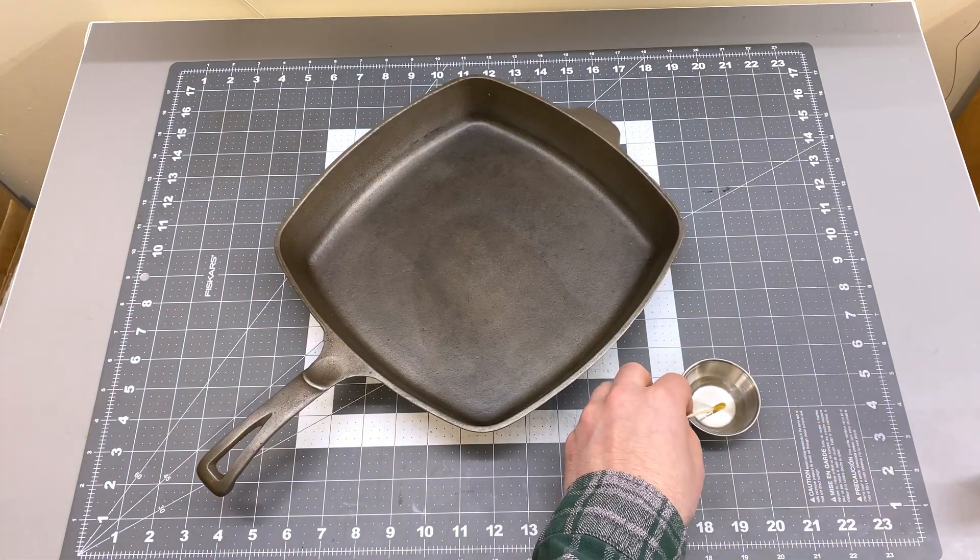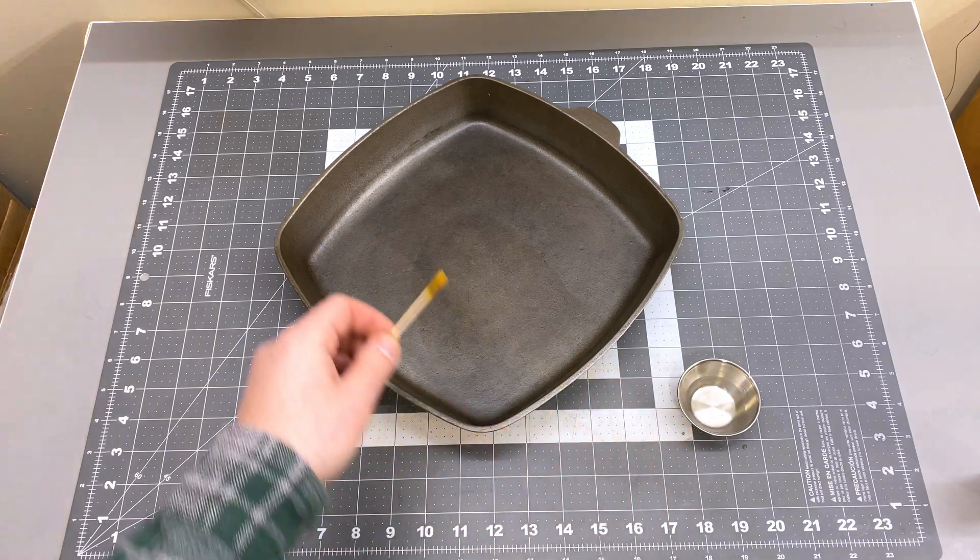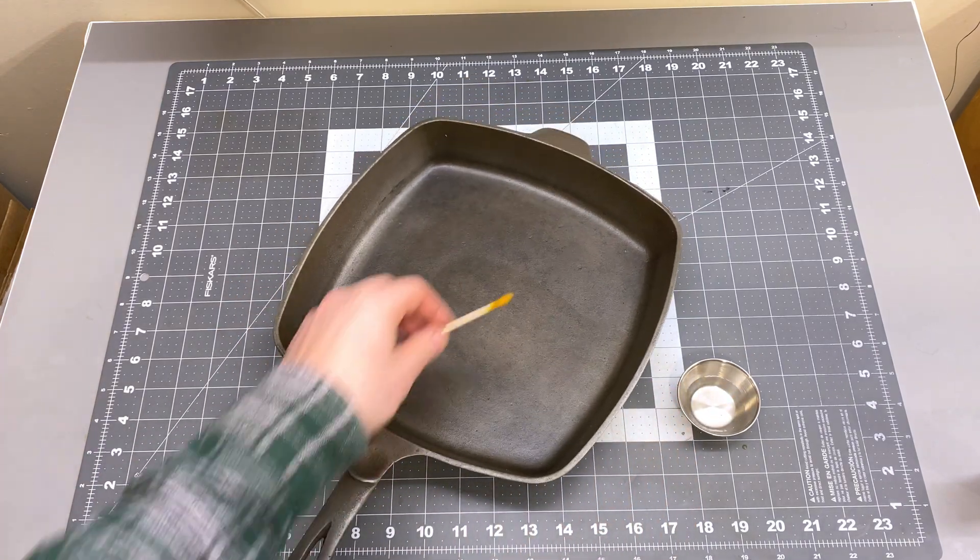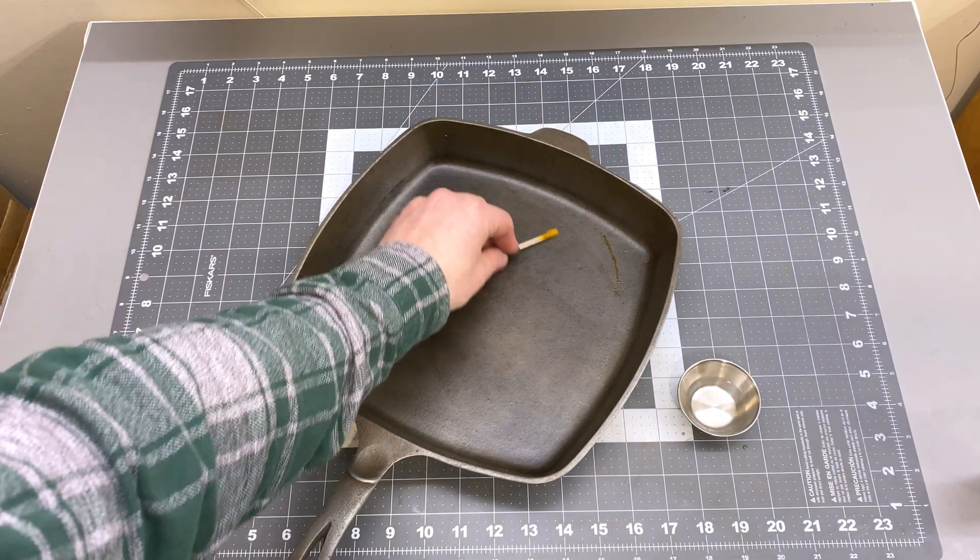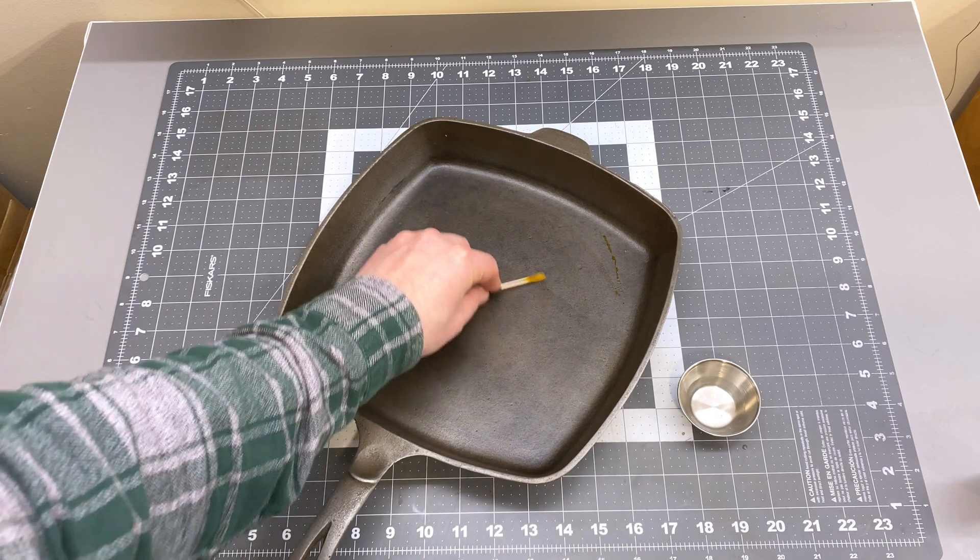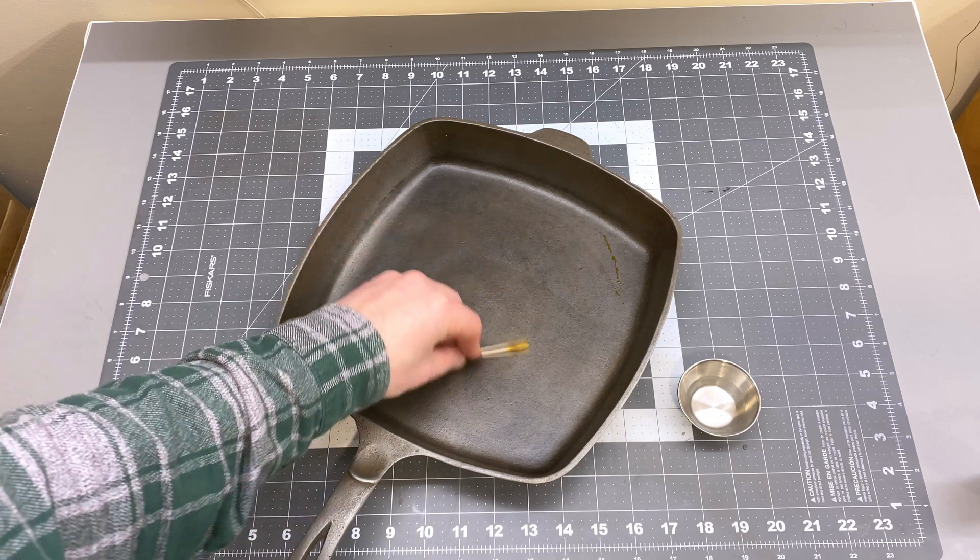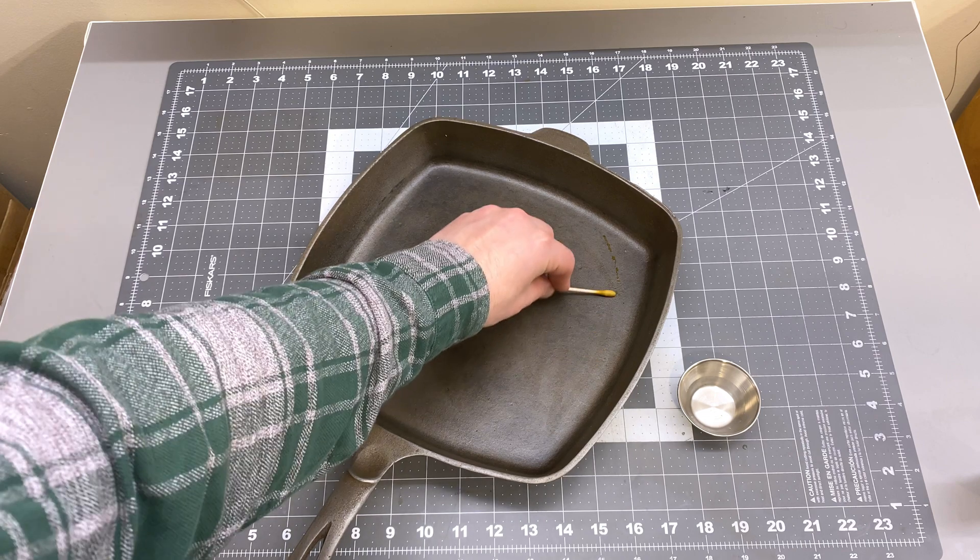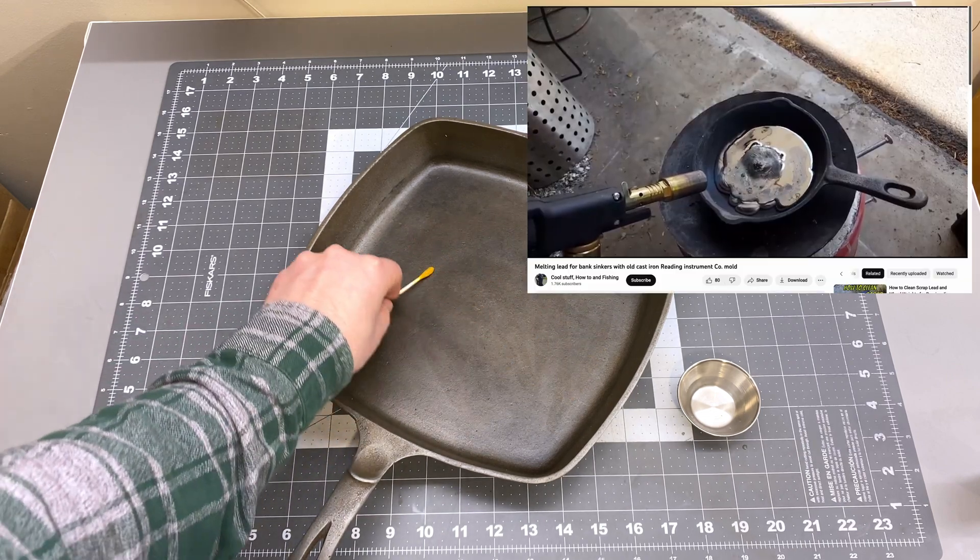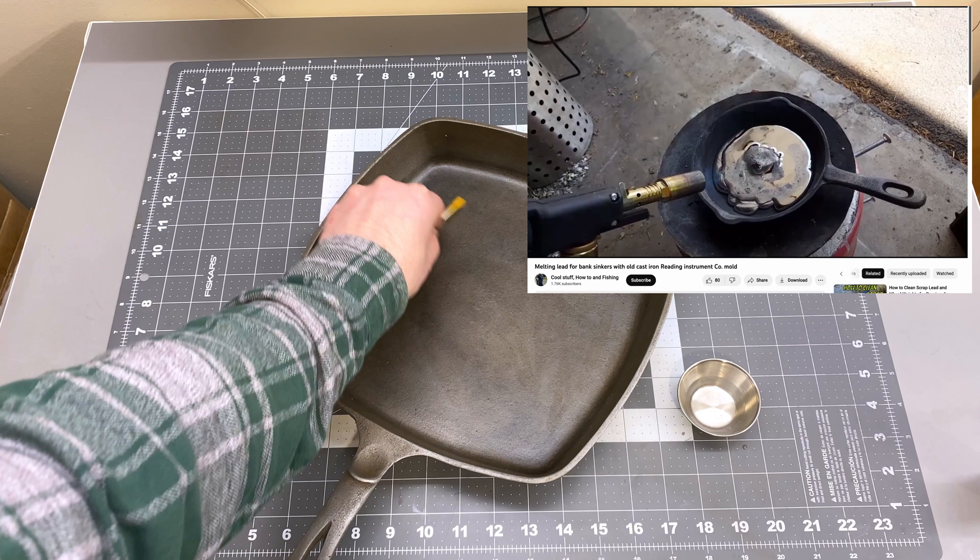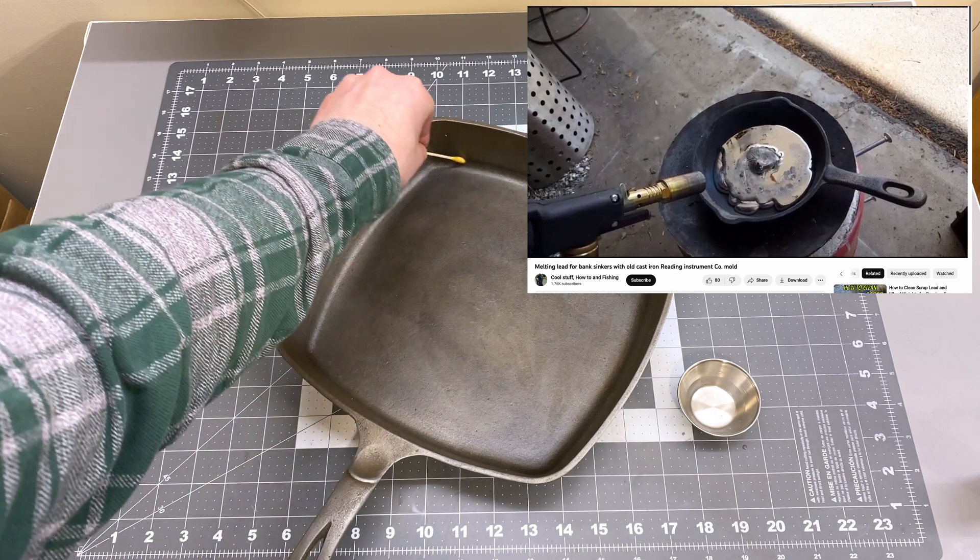Though it doesn't seem like there's a high chance of a pan being contaminated with lead, if you're buying cast iron where you don't know the full history, it is possible that it was used to melt lead for castings of some kind. And as you can see, it's still something that is done today.